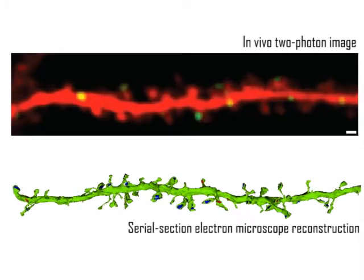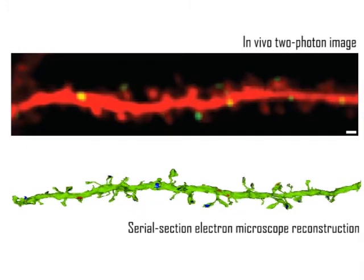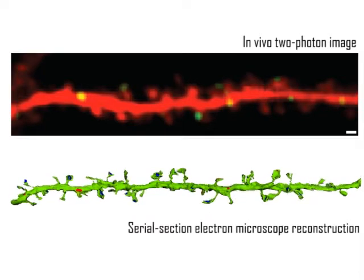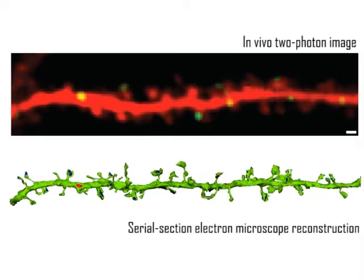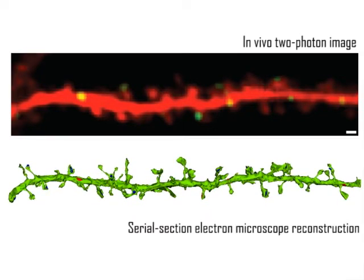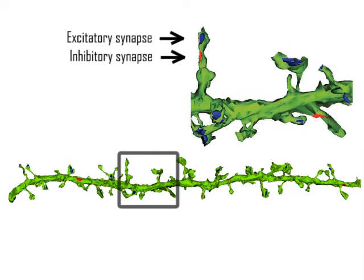Using serial section immunoelectron microscopy, we confirmed that all teodrephrine puncta imaged in vivo correspond to inhibitory synapses. Inhibitory synapses on the spines were always paired with an excitatory synapse that contacted the same spine.